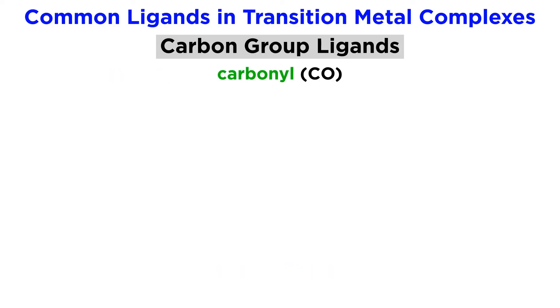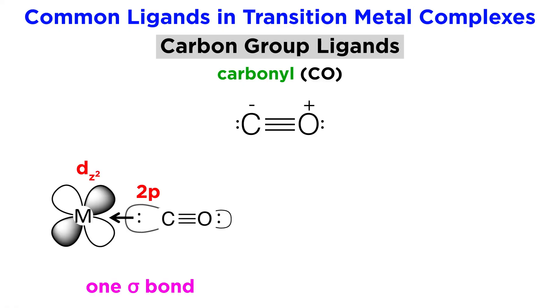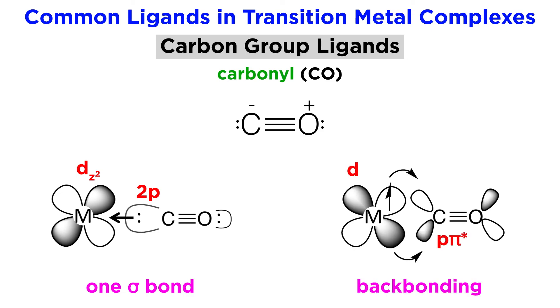Then finally, an extremely common ligand will be the carbonyl, or CO ligand. When encountered in this form, it will look like this, with a triple bond between the atoms and a lone pair on each. This will work very similarly to the nitrosyl ion. The carbon donates its lone pair in the 2p sigma orbital to generate the sigma bond, and then the 2p pi star orbital on the carbon accepts backbonding from one of the d orbitals in the metal.